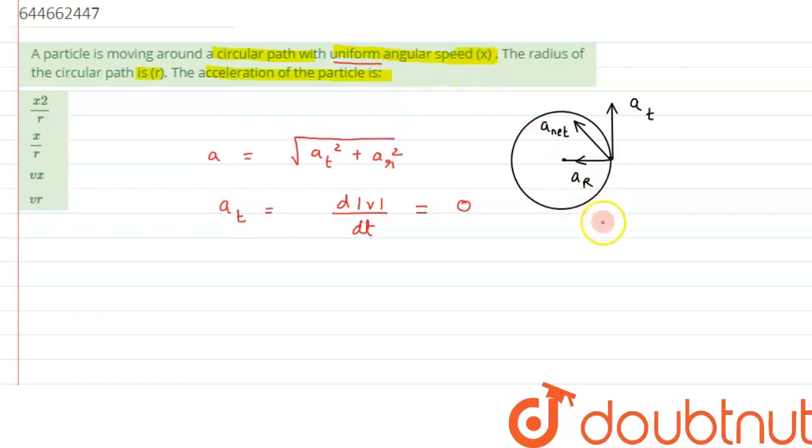We know by the relation v equals r omega, where omega is angular speed. Here in the question it has been represented by x, so we will write it as x. So as we can see, x will be uniform only when v is uniform, and v is the linear velocity acting along the tangent.